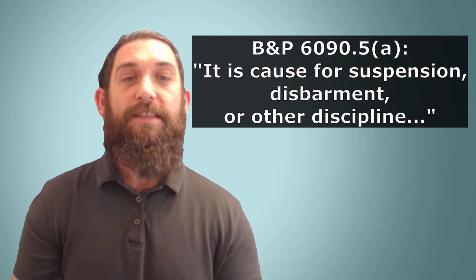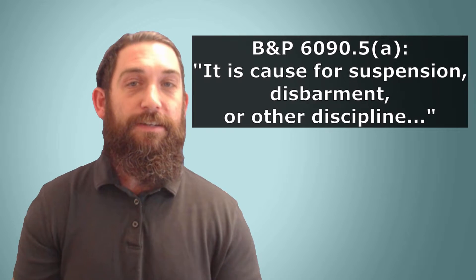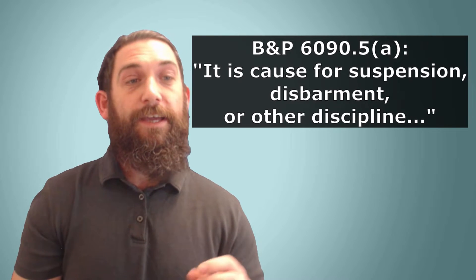Business and Professions Code 6090.5 says that you could be suspended or even disbarred for agreeing or seeking to get agreement that professional misconduct not be reported to the bar, that someone withdraws a disciplinary complaint, or that the record of a civil action for professional misconduct gets sealed from review by the state bar. This applies whether you are the party or representing someone else.